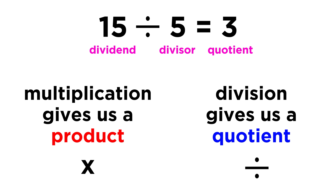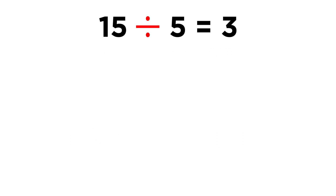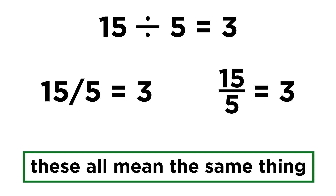So multiplication gives us a product, and division gives us a quotient. With division, early on we see this symbol, but later on this will almost never be used. Instead, we will see a line, either at an angle or horizontal. With this kind of notation, the first number will be divided by the second.